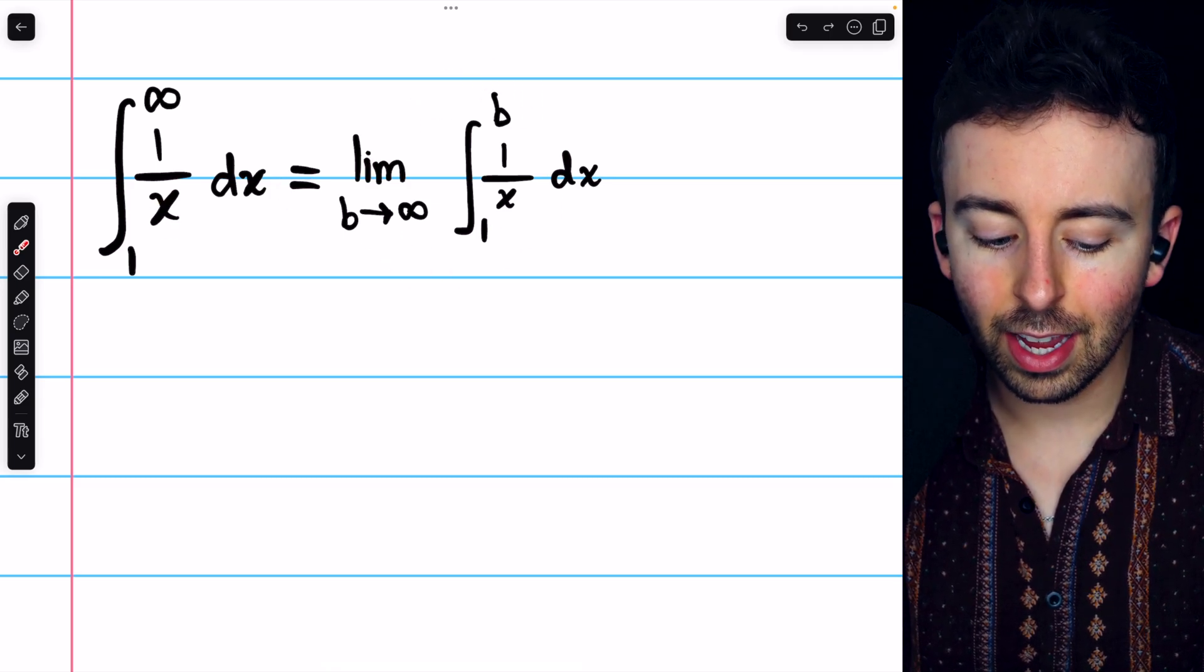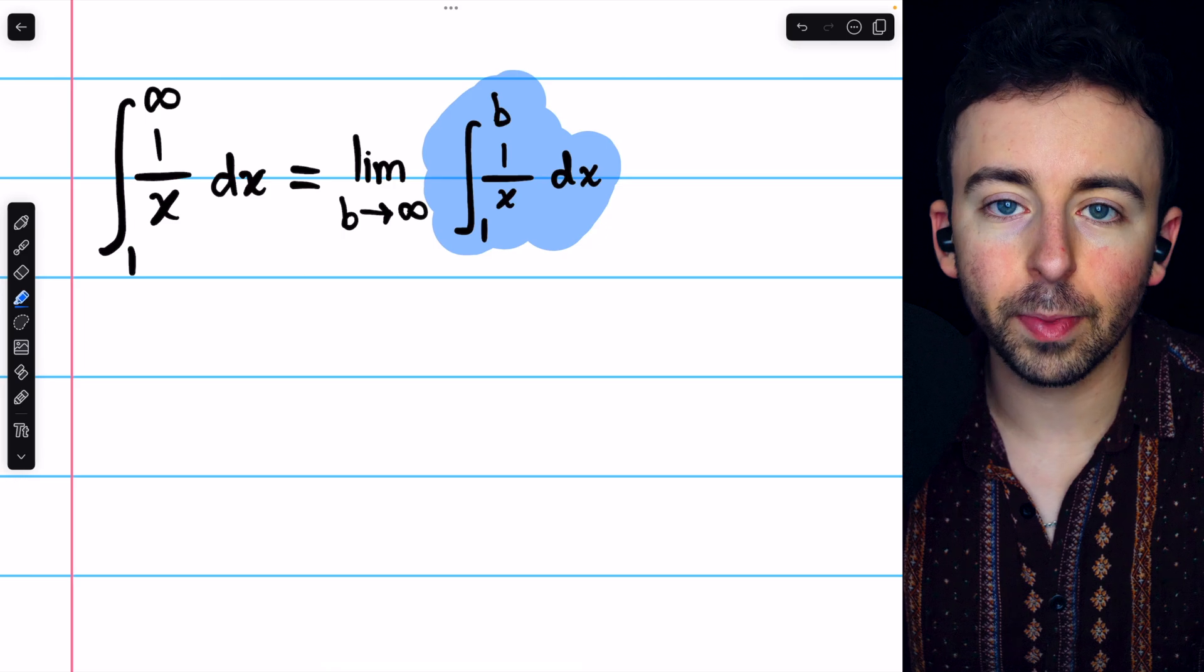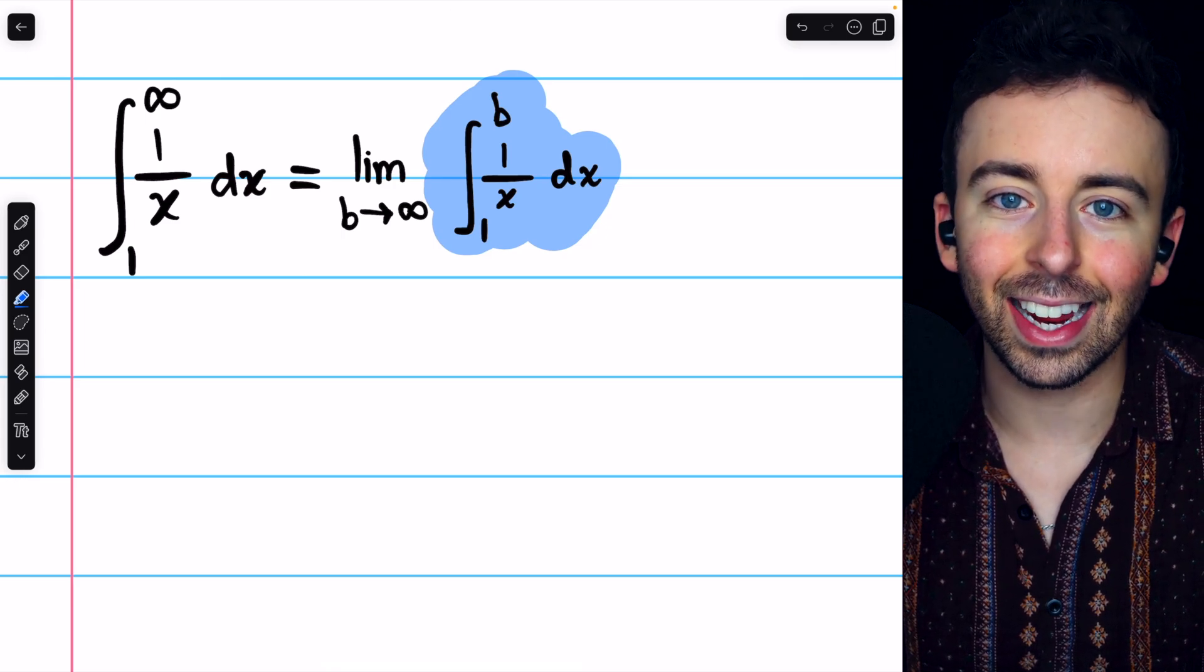this is equal to this. Now we have a perfectly normal integral and we can evaluate it and then take the limit.